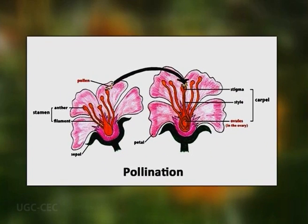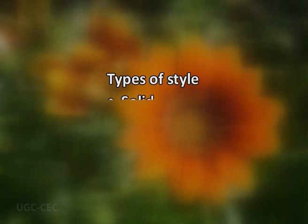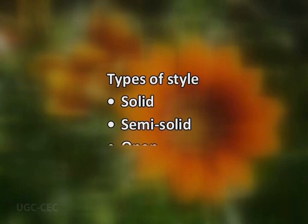In angiosperms, there are three categories or types of style based on the morphological features of the style. These are solid style, semi-solid style, and open or hollow style.